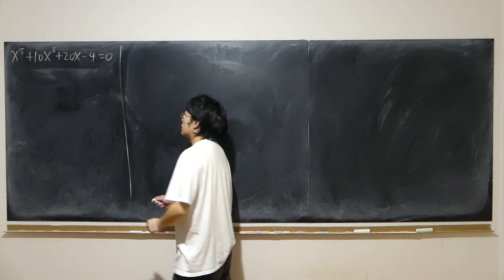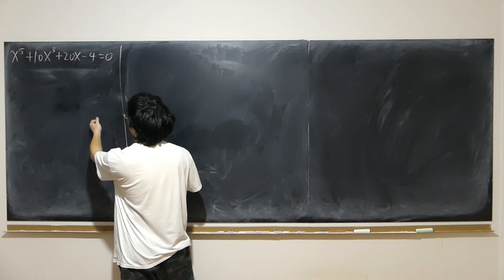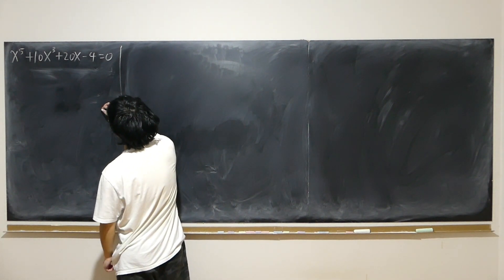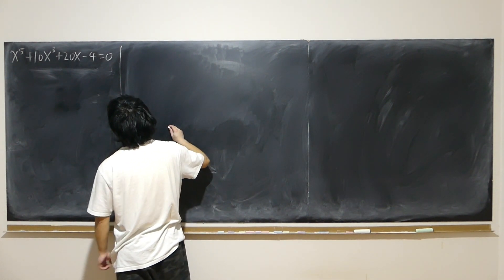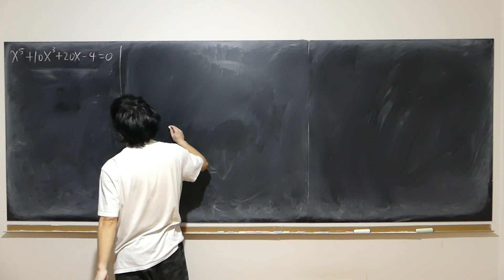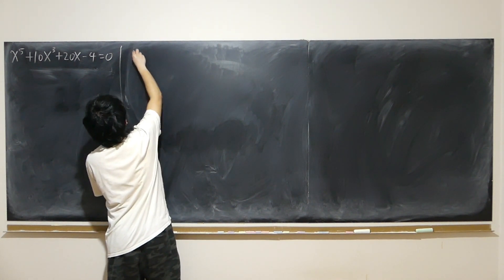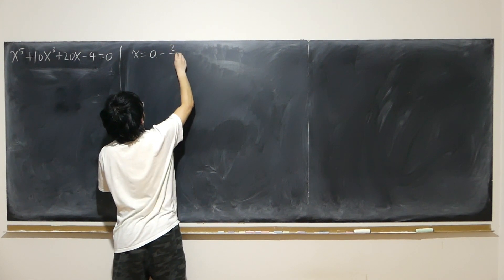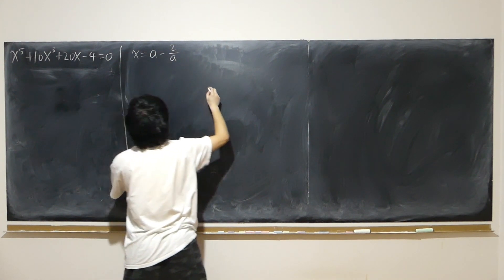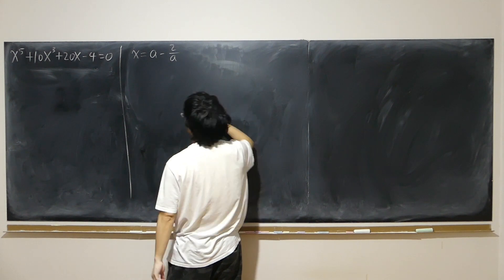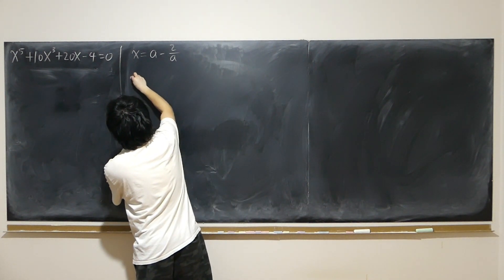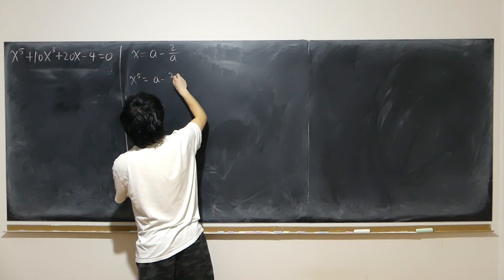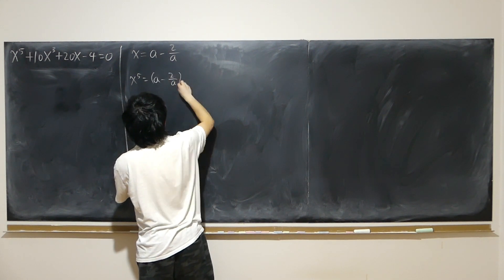I just found this quaint equation on the internet: x to the power of 5 plus 10 times x to the power of 3 plus 20x minus 4 equals 0. The solution I also found on the internet says we should let x equal to a minus 2 over a. I don't know the motivation behind it, but it turns out to be very useful. So x to the power of 5 is (a minus 2 over a) to the power of 5.